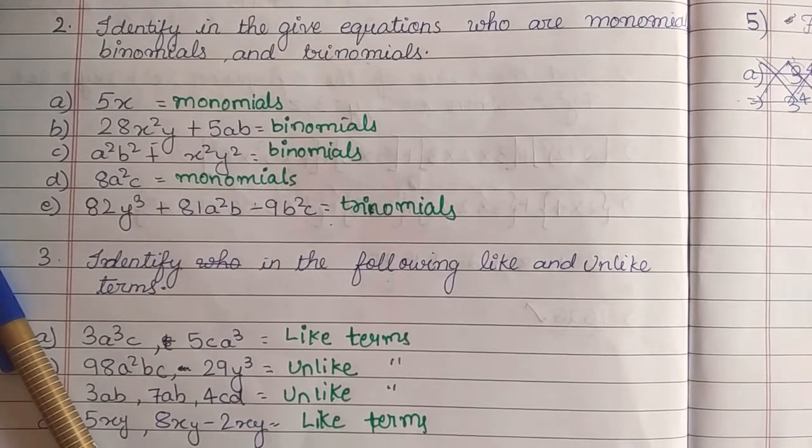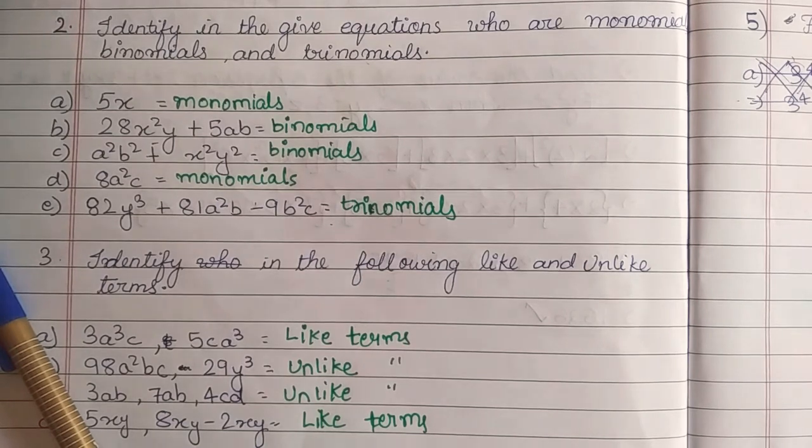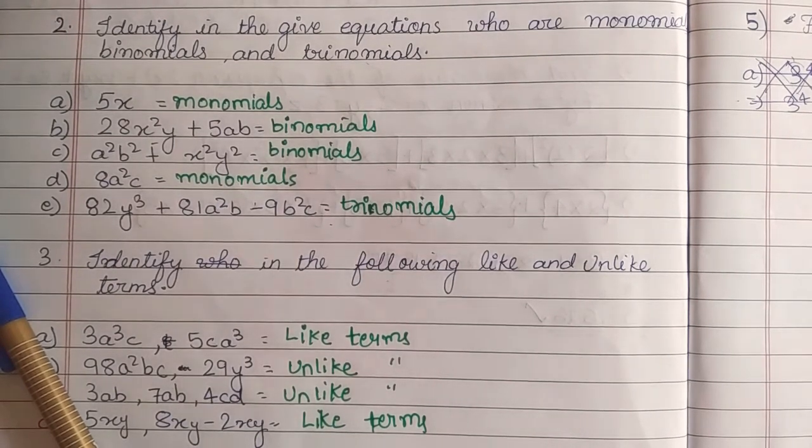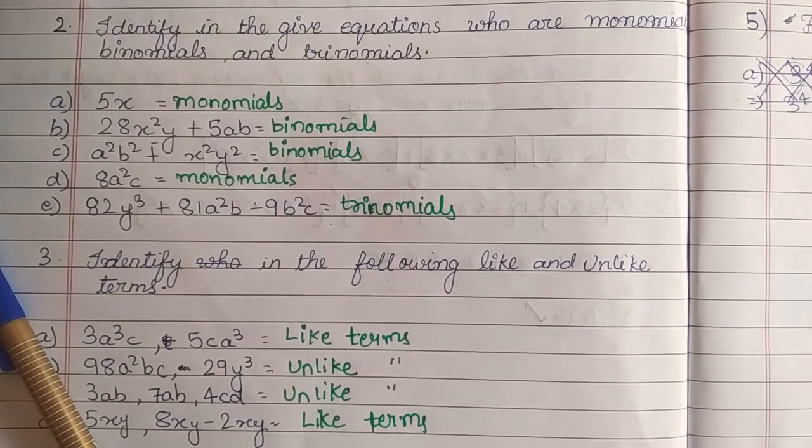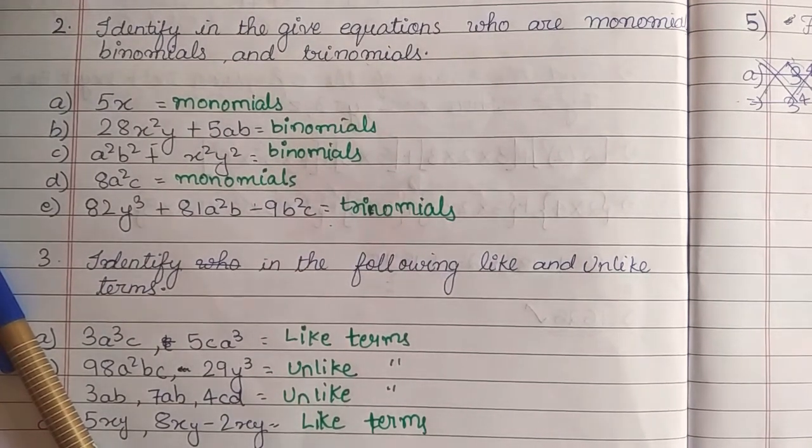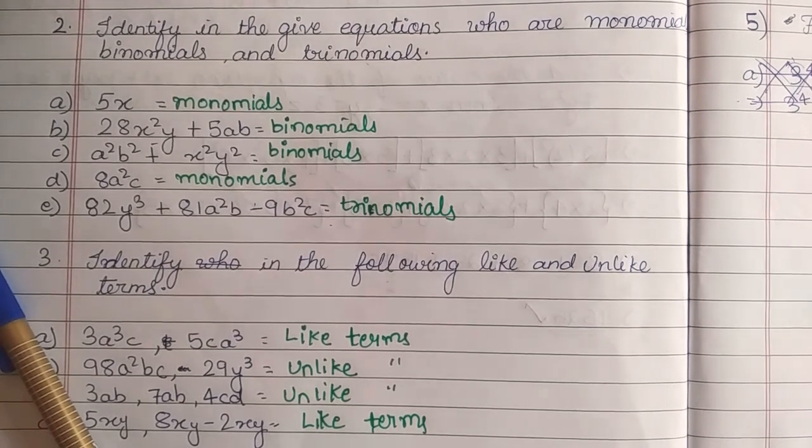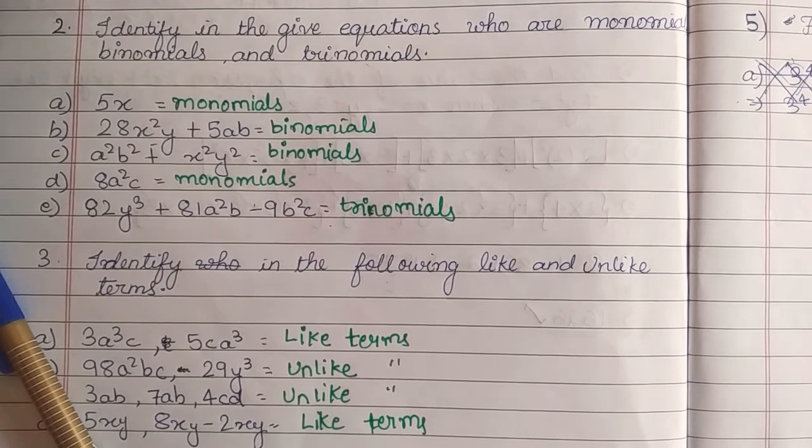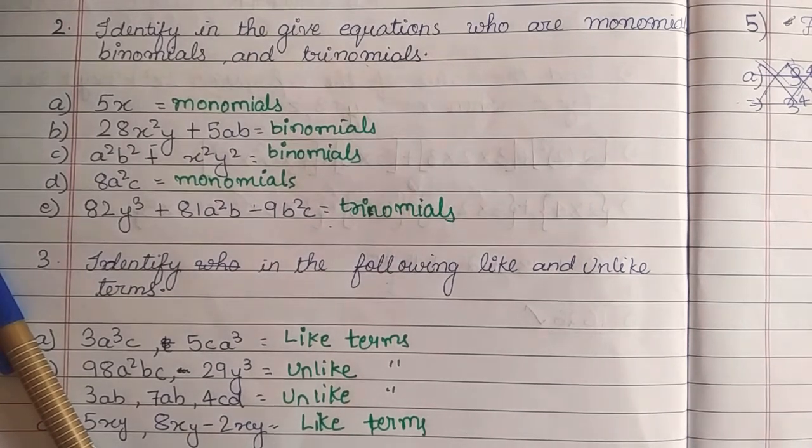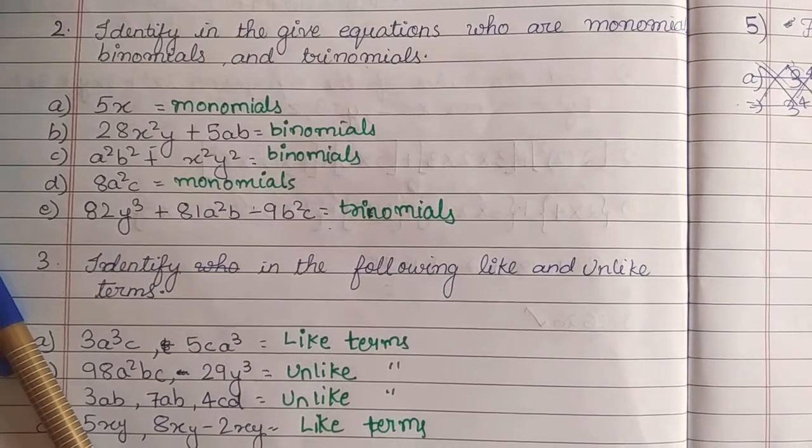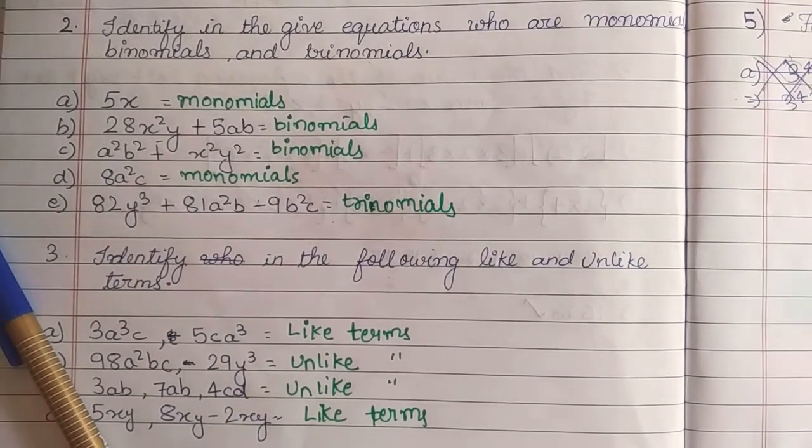So let's continue with the third question. Identify in the following like and unlike terms. First is 3a³c and 5ca³ which is like terms. 98a²b + 29y³ which is unlike. 3ab, 7ab and 4cd which is also unlike terms. And the last one 5xy, 8xy - 2xy which is like terms.